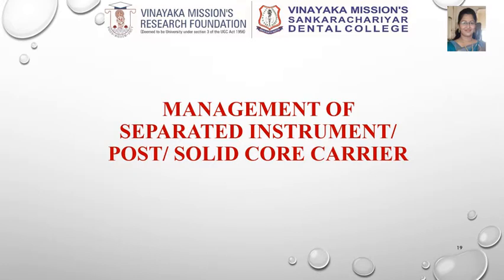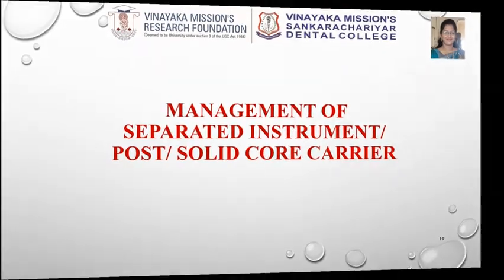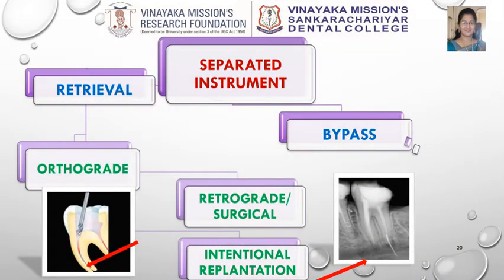Coming to the management of a separated instrument, post, or solid core carrier. If there is a separated instrument, we have two options: either we can retrieve it or we can bypass it. Retrieval can be done using an anterograde method — that is, through the crown — or using invasive methods like retrograde approach or intentional replantation.